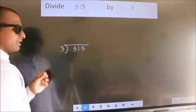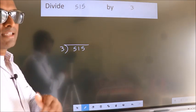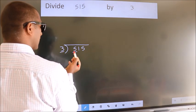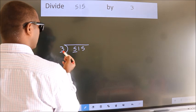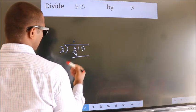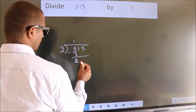This is your step 1. Next, here we have 5, here 3. A number close to 5 in 3 table is 3 1s 3. Now we should subtract, we get 2.